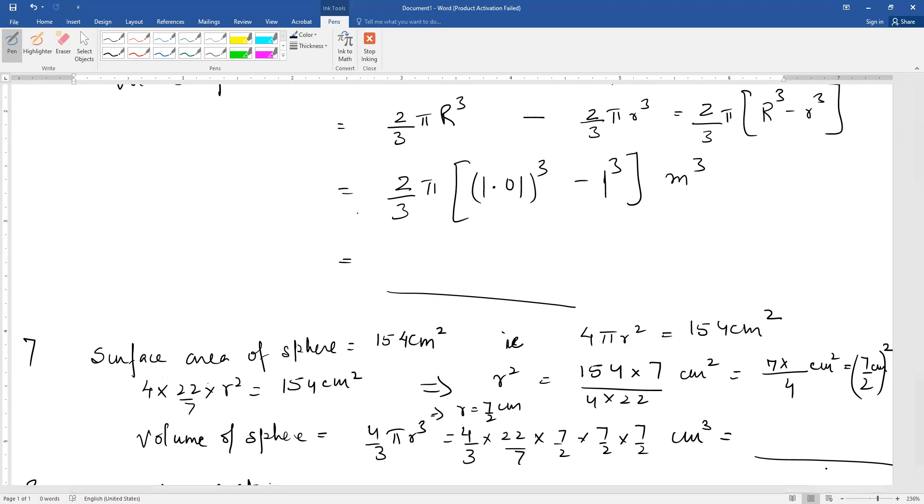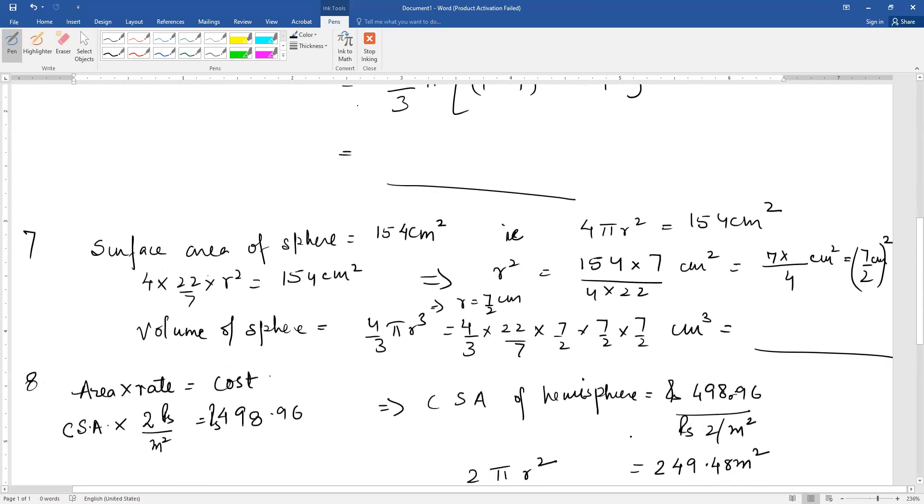You know that rate into area gives total cost. Since this dome was whitewashed from inside, curved surface area of the hemisphere into rate rupees 2 per meter square equals cost rupees 498.96.